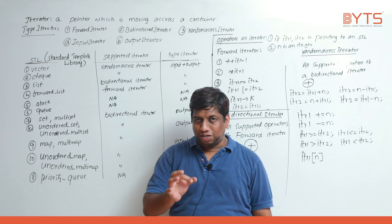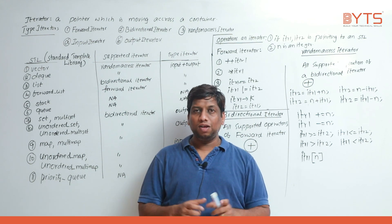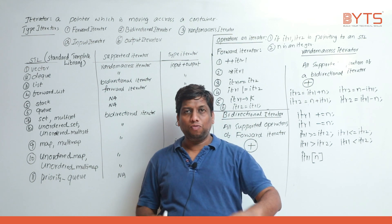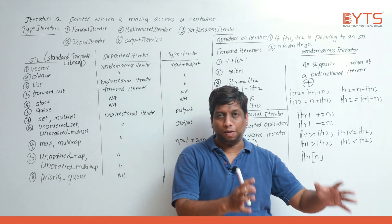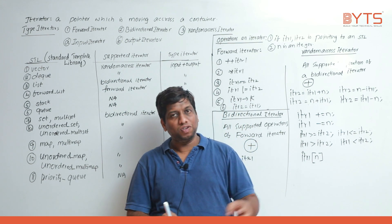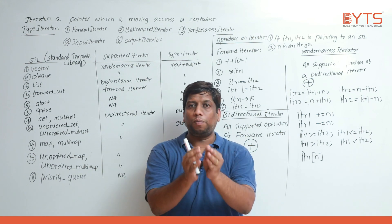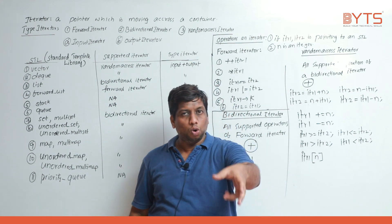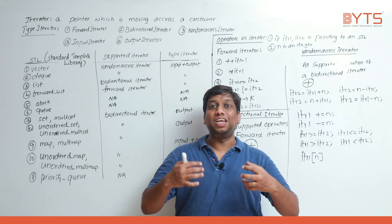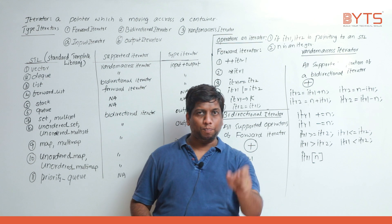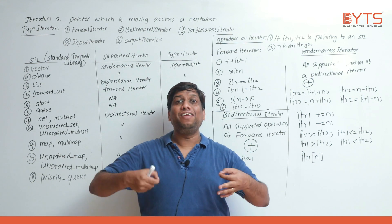If the STL concept were not there, every programmer would have to create each data structure themselves. Some people took the common operations done on data structures and implemented them in a Standard Template Library. A library means a piece of code already written by someone else, written in a generic — template — way, not just for integers or strings but for any type. That is what we call the Standard Template Library.